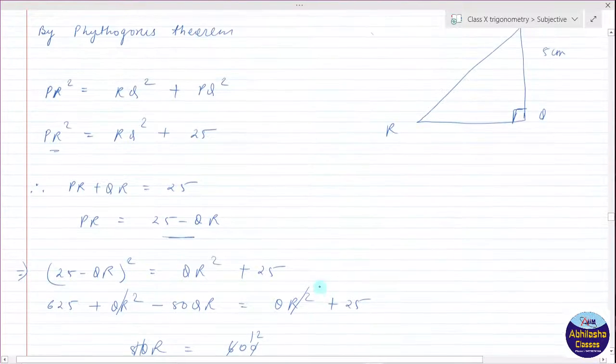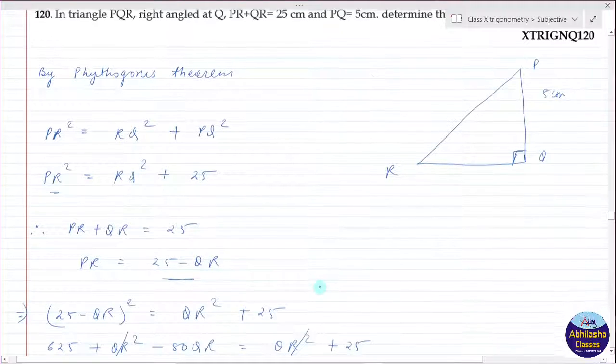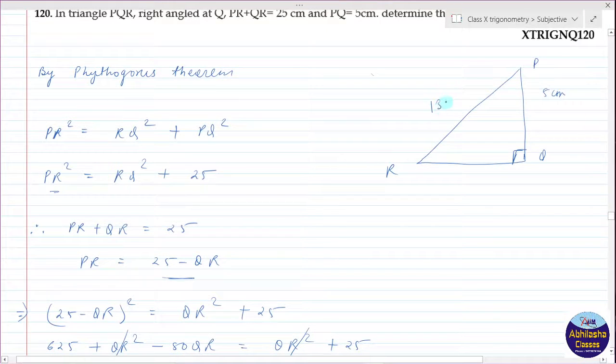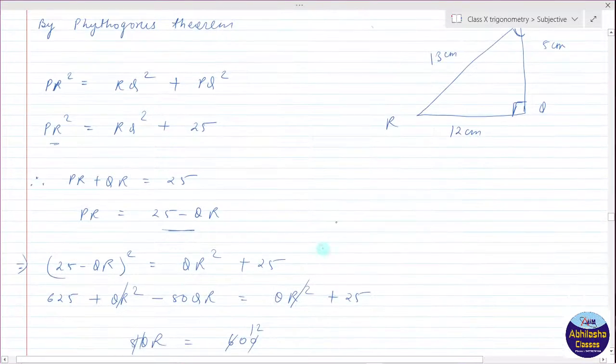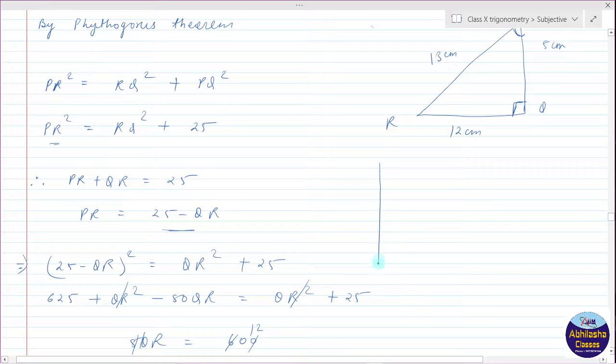So this PR is 13 cm and 12 cm. The value of sin P, sin P, cos P, and tan P. So therefore sin P will be perpendicular upon hypotenuse, so perpendicular is 12 cm and hypotenuse is 13, so we write 12 upon 13.